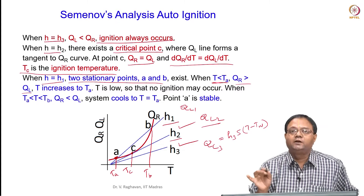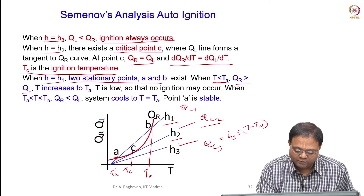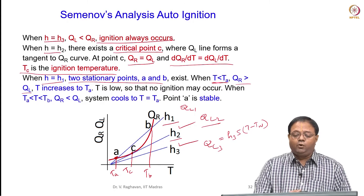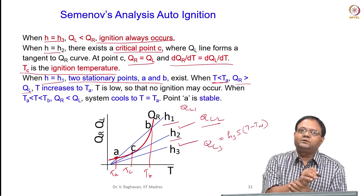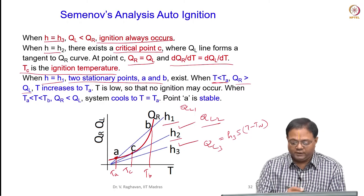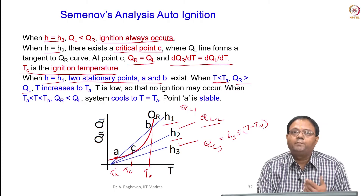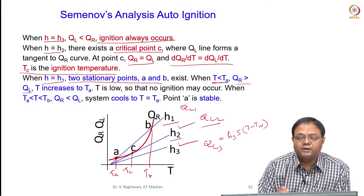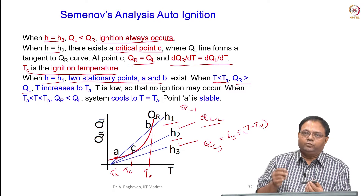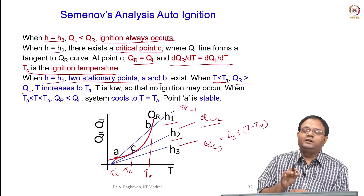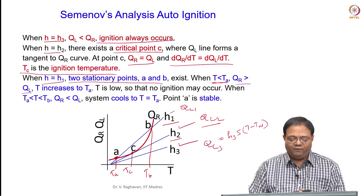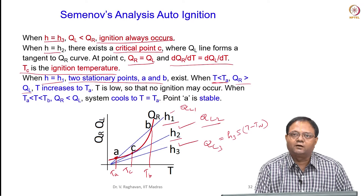When T is less than TA, Qr is greater than QL, so the temperature will slowly increase towards TA. However, ignition may not occur because the temperature itself is very low — it may not equal the auto-ignition temperature. The temperature increases and reaches TA. After reaching TA, further increase will not occur because for T greater than TA (but less than TB), Qr is less than QL1 — so the system cools back down.